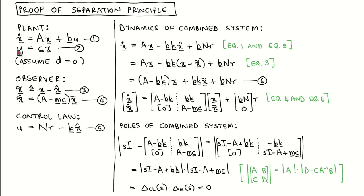We start by combining the plant state equation and the control law, which gives us this line. We then use the definition of the estimation error to get rid of x̂, which produces this line. After gathering the terms with x, we get this expression, which we call equation six.